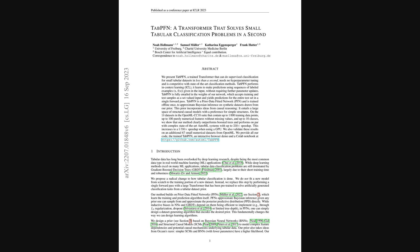Hello everyone, and welcome to the AI Research Roundup. I'm your host, Alex, and today we're diving into some interesting AI research. We'll be looking at a paper called Tab PFN — a transformer that solves small tabular classification problems in a second.